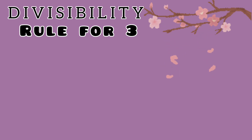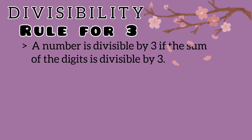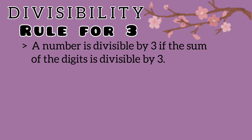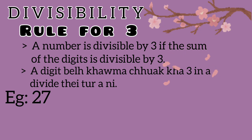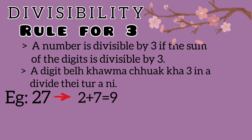Divisibility rule for 3: A number is divisible by 3 if the sum of its digits is divisible by 3. If you choose the number of digits, 3 is divisible by 3. This is the number of digits — 3 is divisible by 3.